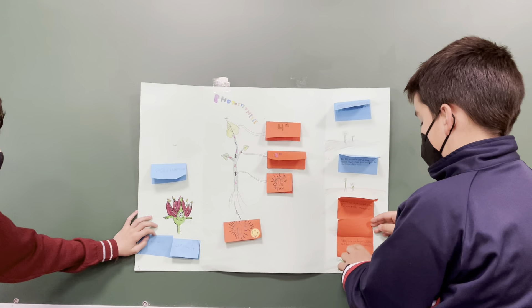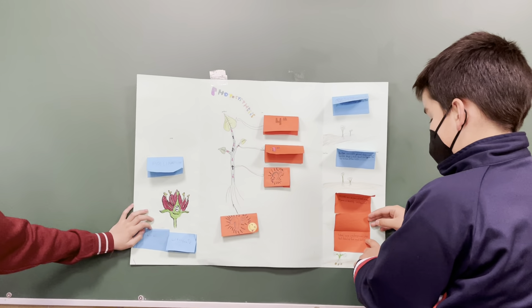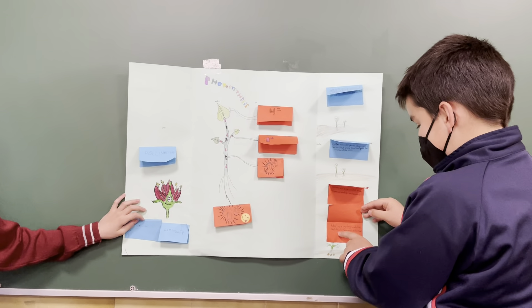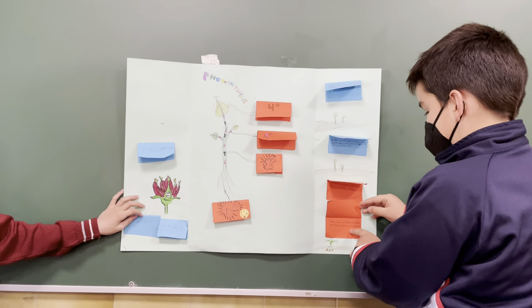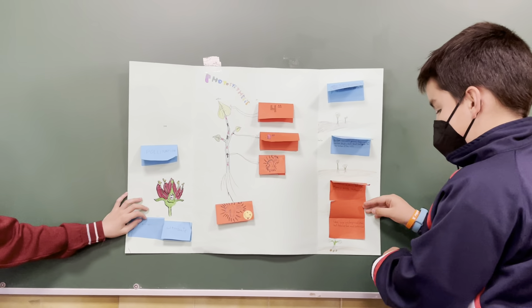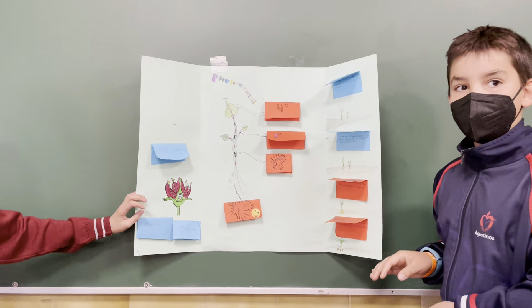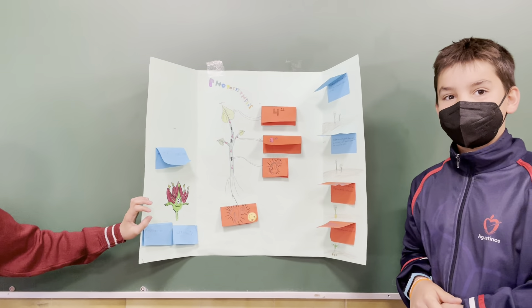Tubers are underground stems that develop from small buds and nodes. Tubers are underground stems that develop from small ones with aerial areas.